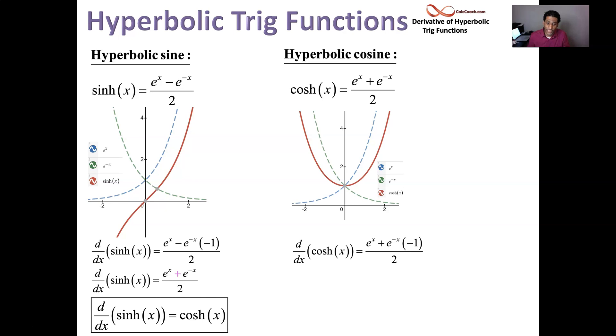Its derivative, e to the x minus e to the minus... its derivative is hyperbolic sine. Very important because with trig, cosine derivative is negative sine. But with hyperbolic trig, hyperbolic cosine's derivative is just hyperbolic sine.